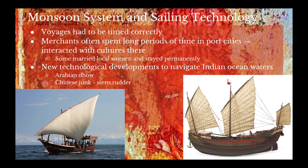The weather made ocean trade difficult because of the monsoon seasons. Merchants found they really had to time their voyages carefully. Often they would remain in port cities for months at a time, because if they did not leave when the winds were going in the right direction, they could find themselves lost at sea or their trade voyage could be ruined.